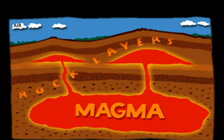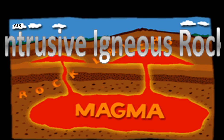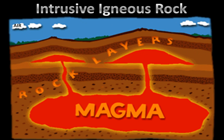In this clip, we're going to talk about how intrusive igneous rocks are created. In order to understand how these rocks form, you have to know a little bit something about molten rock.